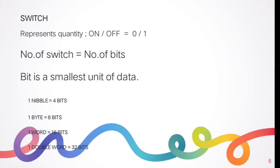A switch is a key concept in digital electronics — it represents quantity, where ON represents one and OFF represents zero. The number of switches should equal the number of bits being used. A bit is the smallest unit of data. One nibble equals 4 bits, one byte equals 8 bits, one word equals 16 bits, and one double word equals 32 bits.